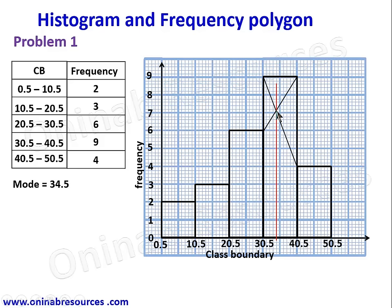We now draw the frequency polygon. If you already have an existing histogram of the same distribution, you locate the midpoint of the top of each bar and join them together. So for the first bar we mark the midpoint, then the second bar midpoint, third, fourth, and fifth.